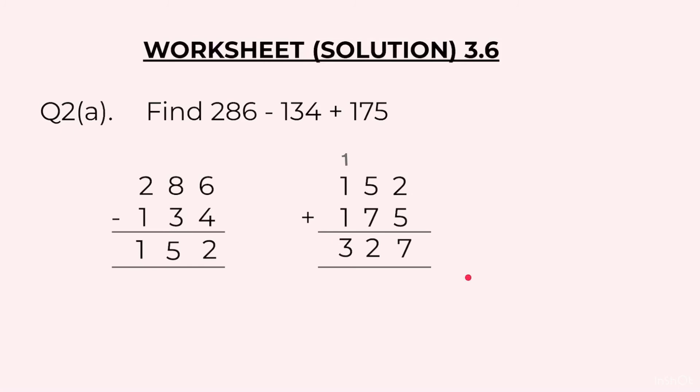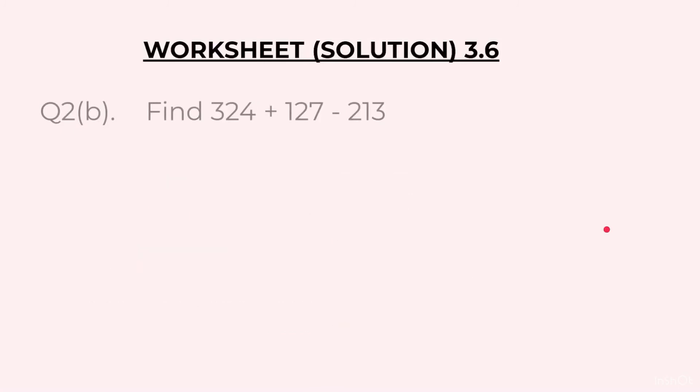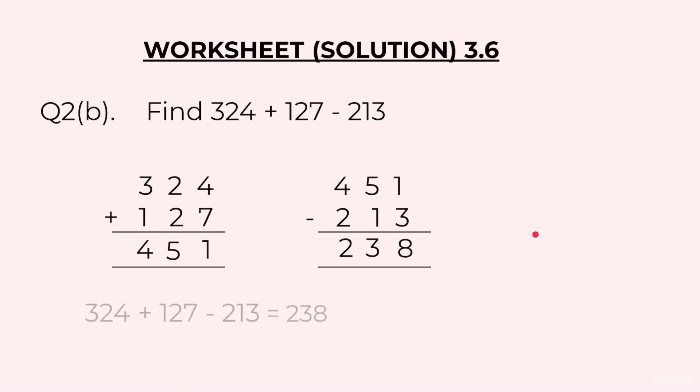B part was: we have to find the value of 324 plus 127 minus 213. When we add the first two we get 451. Now 451 minus 213, we do this, so our final answer is 238.